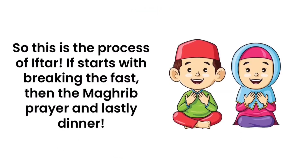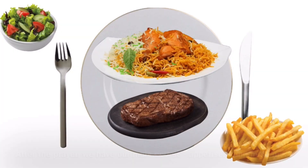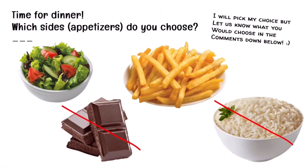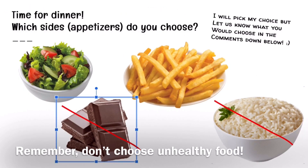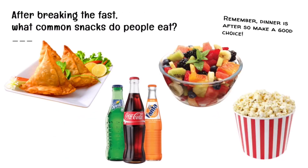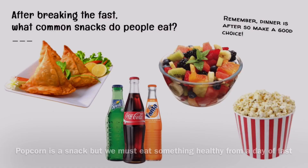And that is the process of iftar. It starts with breaking the fast, then the Maghrib prayer, and lastly dinner. So let's have a recap: this was our iftar plate and we broke the fast with our dates. We had a quick snack and then we had our main course. Remember not to choose the unhealthy food, because you want to make sure you eat something good — that includes popcorn and soda.